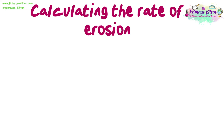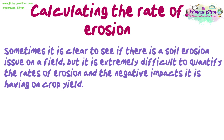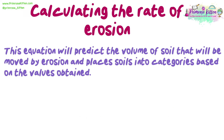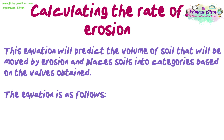Calculating the rate of erosion: sometimes it is clear to see if there is a soil erosion issue on a field, but it is extremely difficult to quantify the rates of erosion and the negative impacts it is having on crop yield. Instead of trying to take complex direct measurements, we use models such as the Universal Soil Loss Equation. This equation predicts the volume of soil that will be moved by erosion and places soils into categories based on the values obtained.